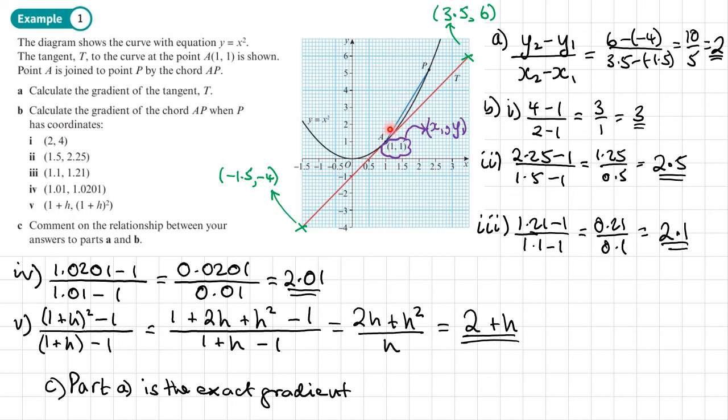As h ends up going smaller and smaller, getting closer and closer to 0, you literally end up with 2, which is the exact value there. So in words: as P gets closer to A, the gradient gets closer to 2.